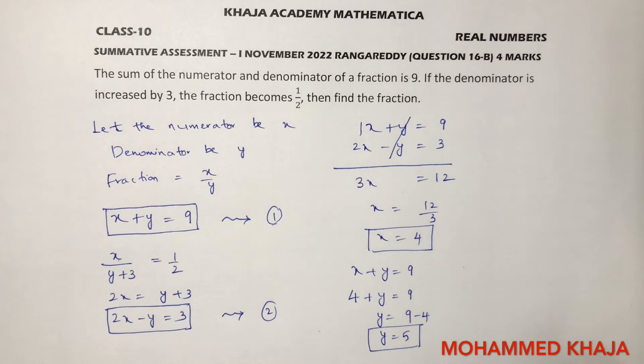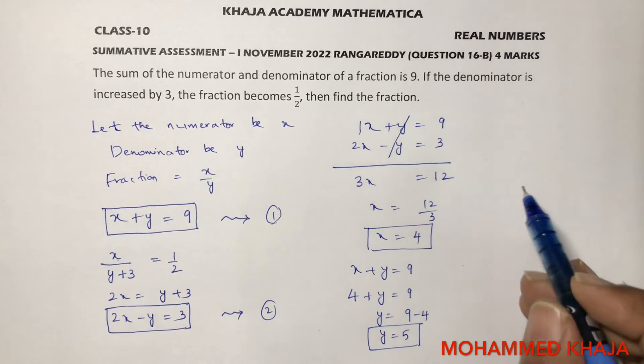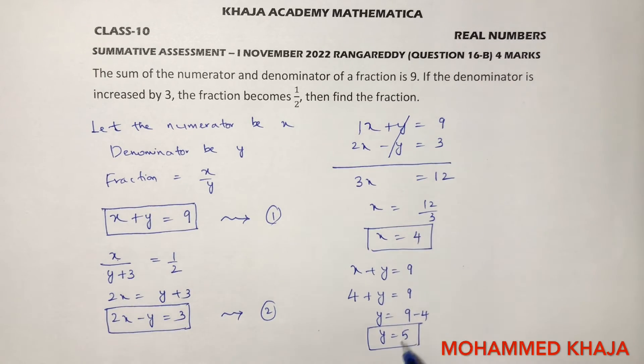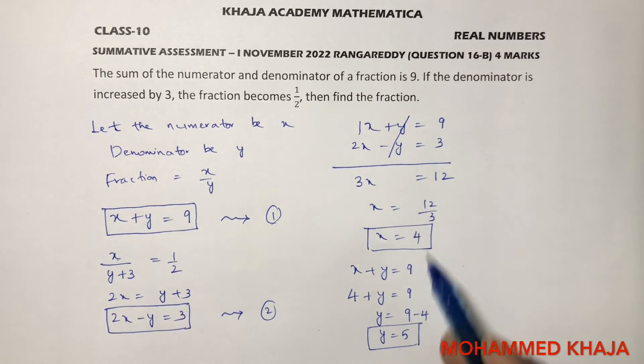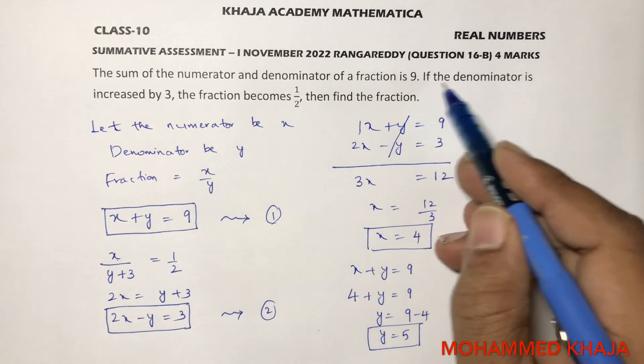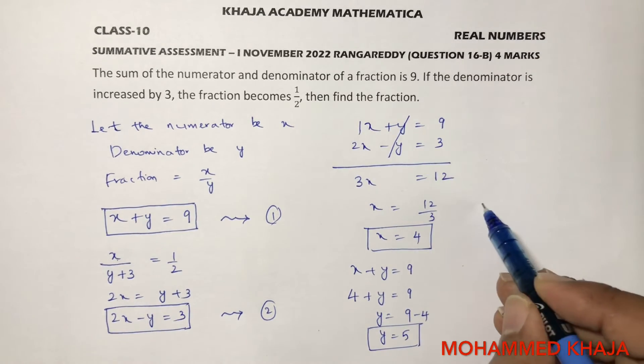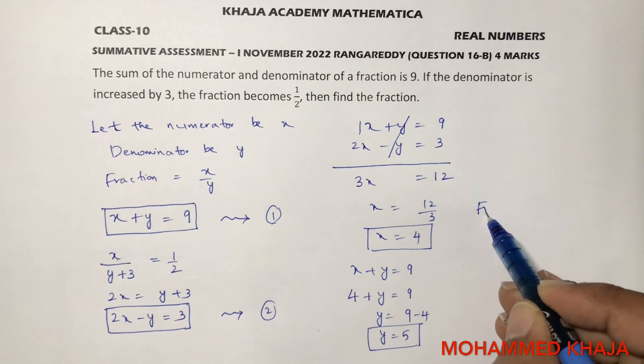You can check by substituting: 4 plus 5 is 9. Then the fraction will be x by y.